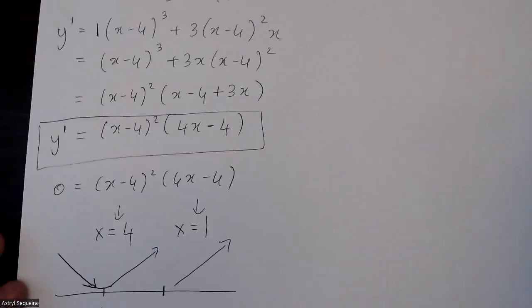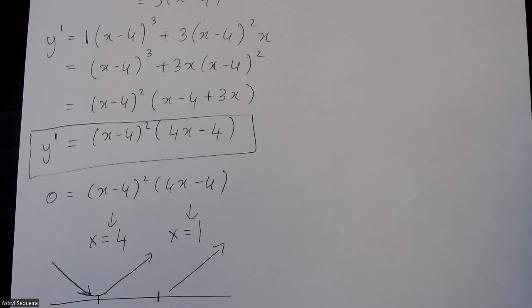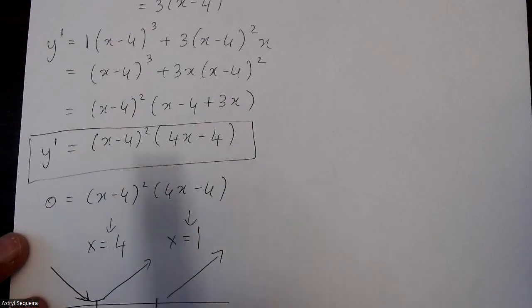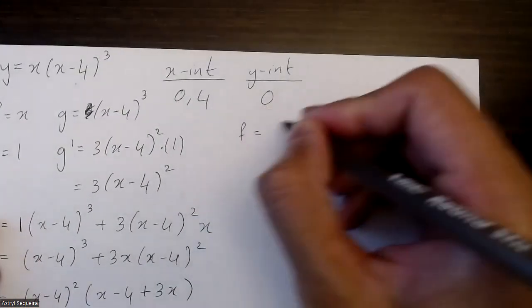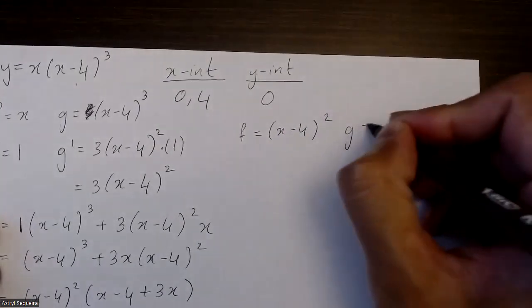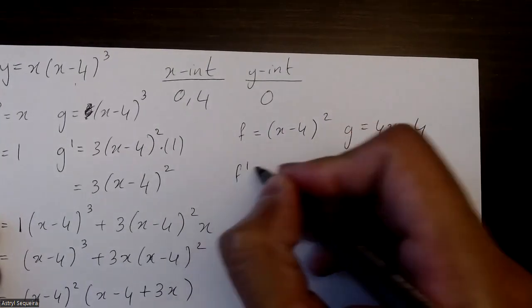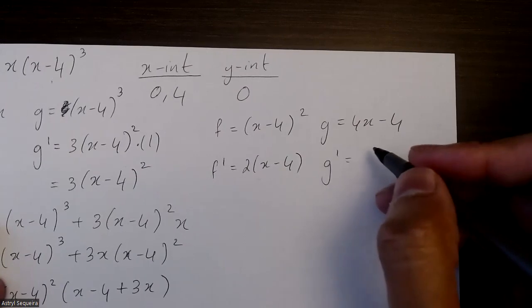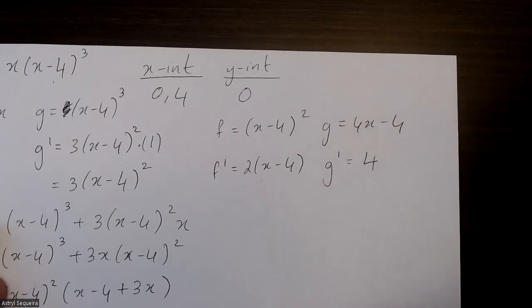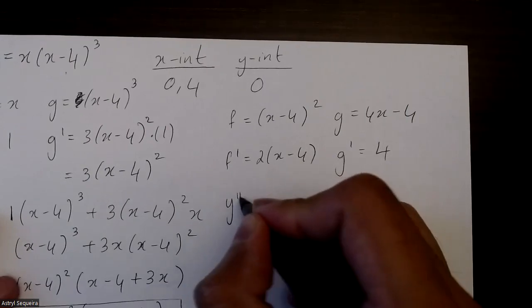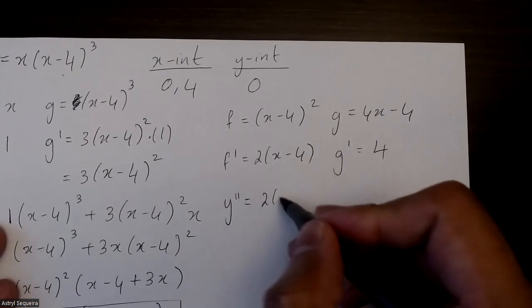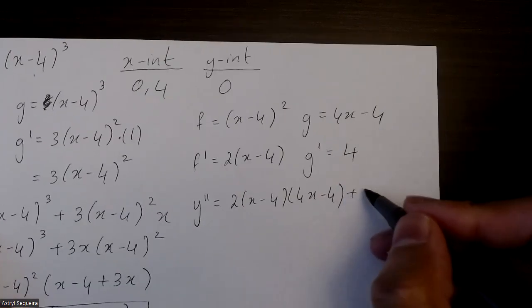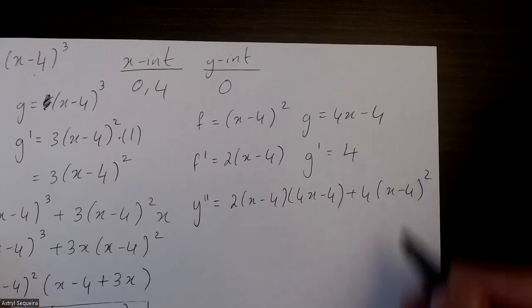Now I'll find the second derivative to identify inflection points and intervals of concavity. It's going to be product rule again. F equals (x minus 4)², G equals 4x minus 4. F prime is 2(x minus 4), and G prime is just 4. The second derivative is F prime·G plus G prime·F.